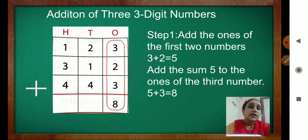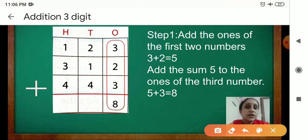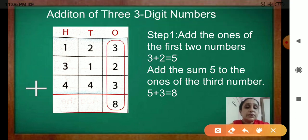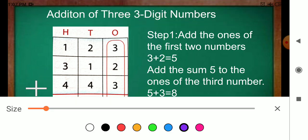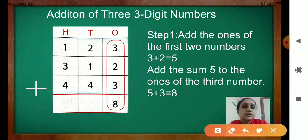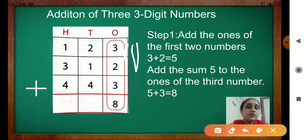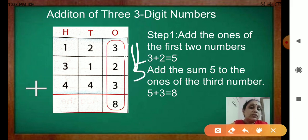So, step 1: you have to add the 1s of the first 2 numbers. We will add the first 2 numbers, that is 3 plus 2. This 3 plus 2, first we will add — you will get 5. And after that, add the sum 5 to the 1s of the third number. So here you are getting 5, and then you will add with 3, you are getting 8.